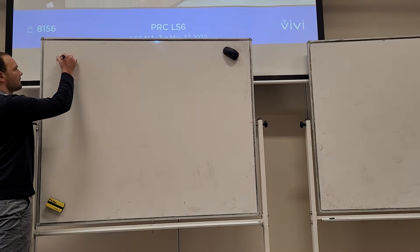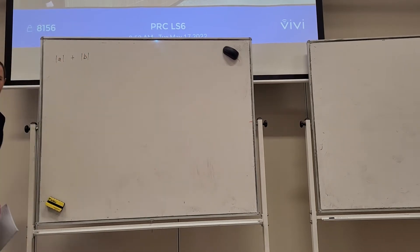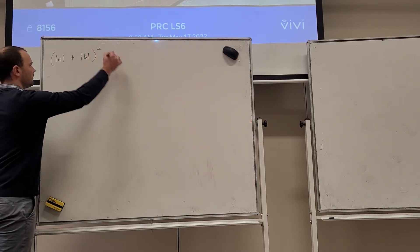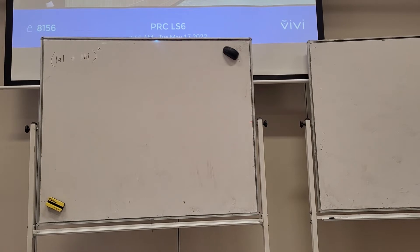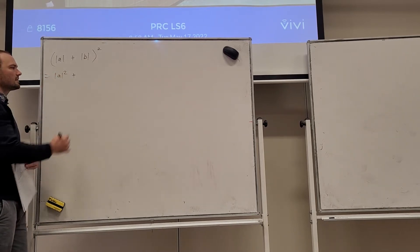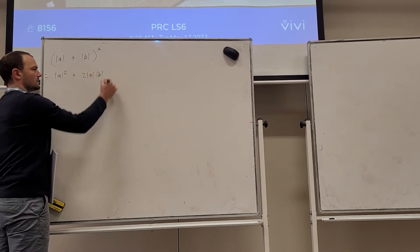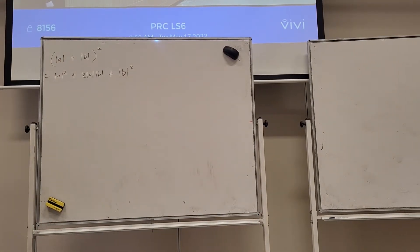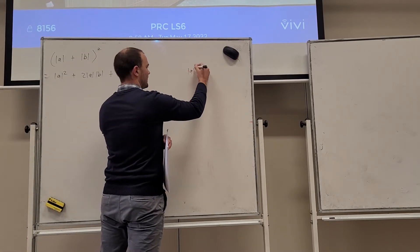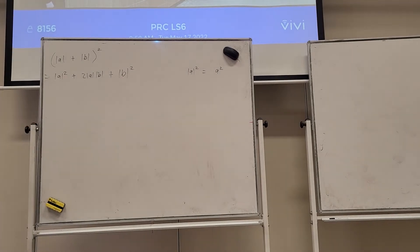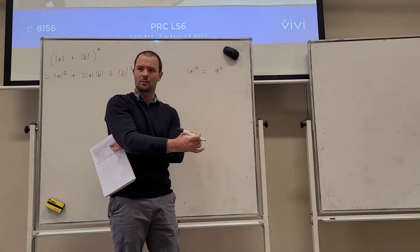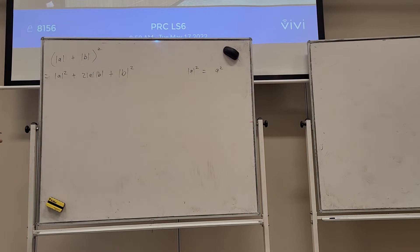So we have the modulus of A plus the modulus of B, all squared. We can imagine two vectors or two sides of a triangle. What I'm going to start with is just square it: |A| + |B| squared becomes |A|² + 2|A||B| + |B|². Now, by definition, |A|² = A² — because modulus makes a number positive, and squaring always makes it positive, so we can form that substitution.